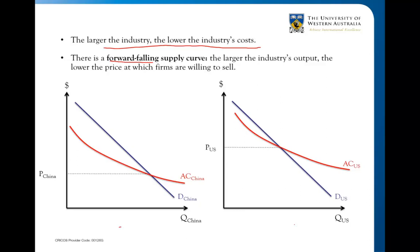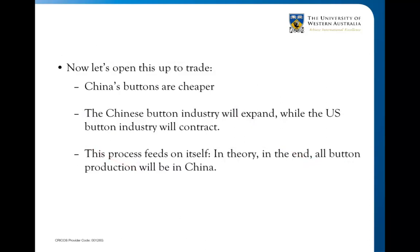Here I have two countries — the US and China — in this particular industry. Average costs in China are considerably lower than in the US. If there were no international trade, US consumers would pay a higher price, while Chinese consumers pay a lower price due to China's lower average costs. When we open up to trade, Chinese buttons are cheaper. The China button industry expands while the US industry contracts, and this is not a stable equilibrium — it keeps feeding on itself. China expands, its costs get even lower; the US contracts, its average costs get higher. In theory, all button production ends up in China and the US produces zero buttons.